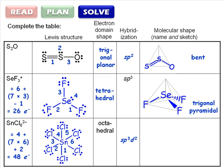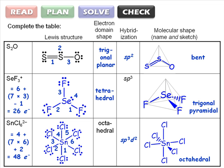Because we don't have any lone pairs, the shape is the same as the shape of the electron domains, so we draw an octahedral molecule. So, check that you've filled in all the boxes, and you're done.